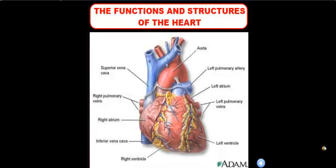We're going to start off with the heart. As we see here on the screen, we have a picture of the human heart. The function of the heart is to pump blood, oxygen, and nutrients to the body. This is very important because our cells need these things in order to make energy to keep carrying out the cell processes that we need to survive.